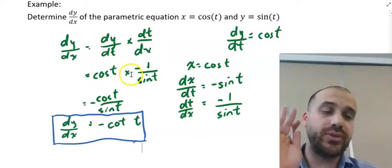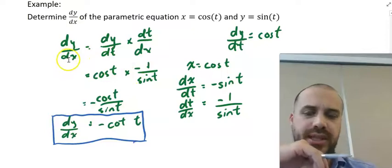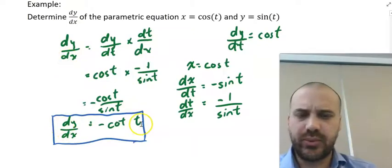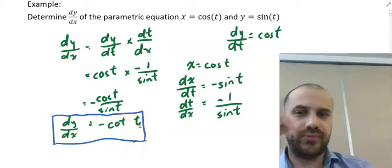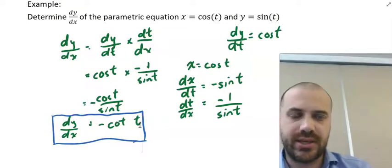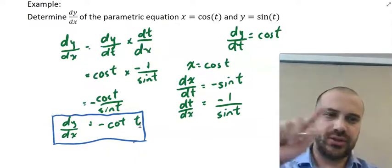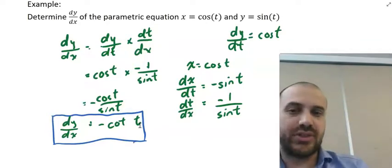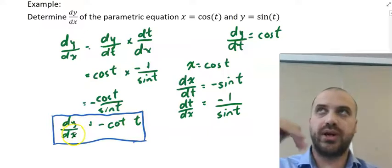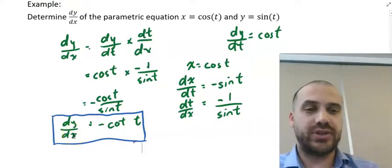Alright, so stop and think about what's happened here. We found the derivative of y with respect to x, but it's not in terms of y or x. It's in terms of t. Which means that we've got an object rotating around a circle. And at any given time t, we can find the rate at which y and x are changing. We can find the tangent to that circle at that given time.